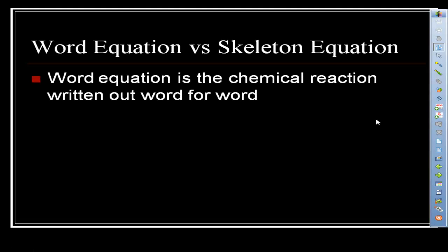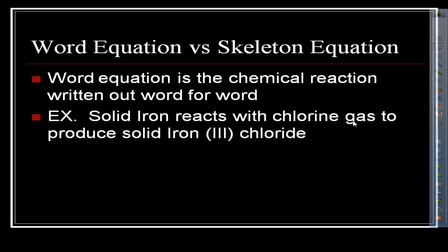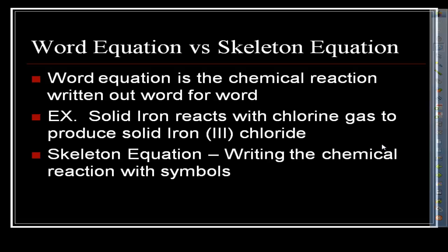A word equation is written out word for word. For example: solid iron reacts with chlorine gas to produce solid iron(III) chloride. When writing the chemical equations, you still have to apply the rules — iron(III) chloride means iron is +3 and chloride is -1, and you must write correct chemical formulas throughout the semester. A skeleton equation is where we put it into symbols instead of writing it out word for word.